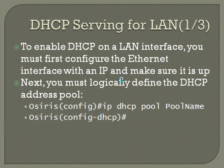The next thing you need to do is logically define the DHCP address pool. That command is 'ip dhcp pool' and then whatever you want the name to be. Right after that it'll jump you into DHCP configuration mode — you'll see the prompt change.